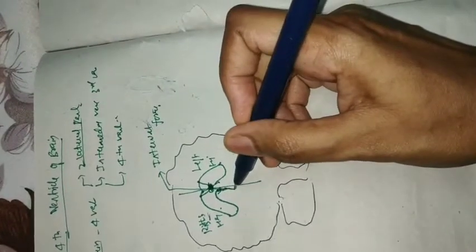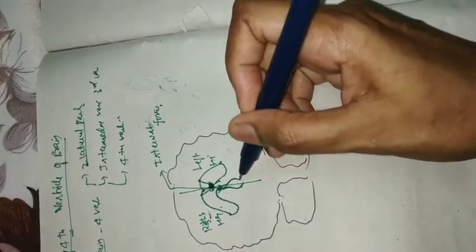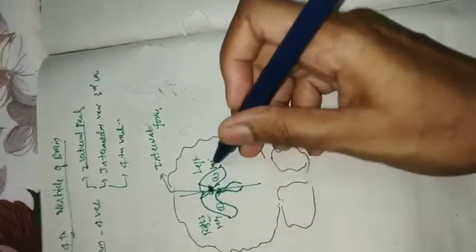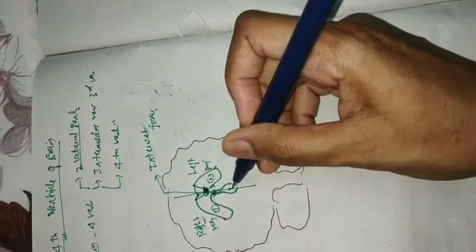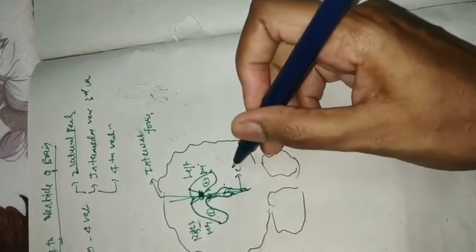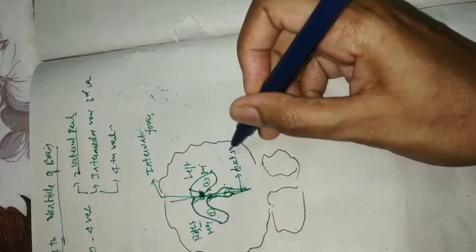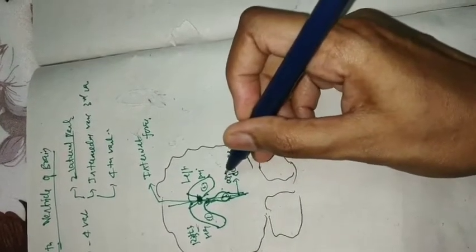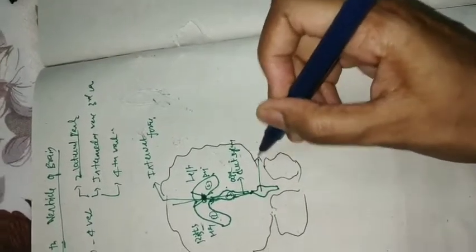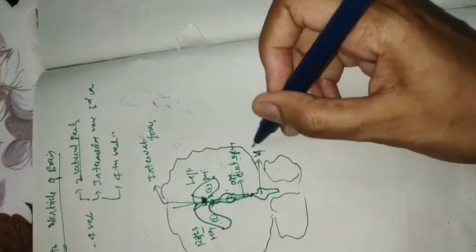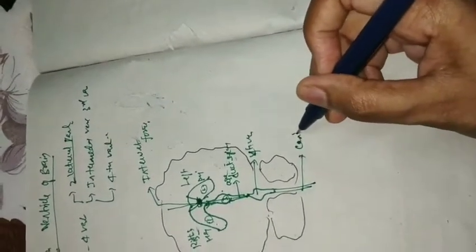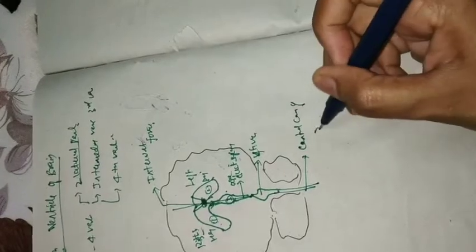Here you will have the third ventricle. You can call them first and second, or lateral ventricles. This is your third ventricle, and then you will have the aqueduct of Sylvius, and here you will have the fourth ventricle, which will continue into the central canal of the spinal cord.